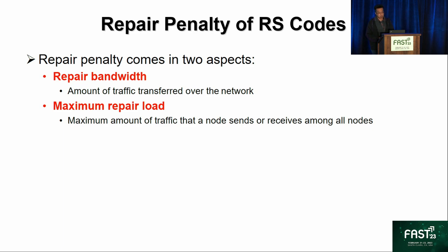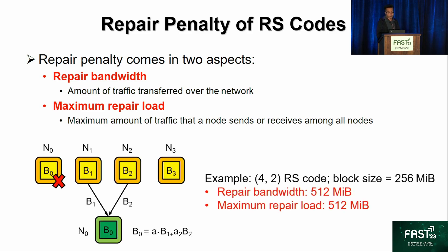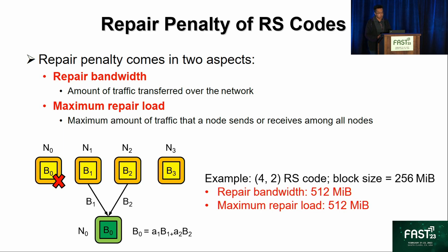The other aspect is maximum repair load, which is the maximum amount of traffic that a node sends or receives among all nodes. For example, in a 4-2 RS code with 256 MB block size — the default in Facebook — if node N0 fails and we need to recover block B0, the new node N0 must collect two blocks from the other available nodes. The repair bandwidth is 512 MB, and N0 is the bottleneck receiving two blocks, so the maximum repair load is also 512 MB.